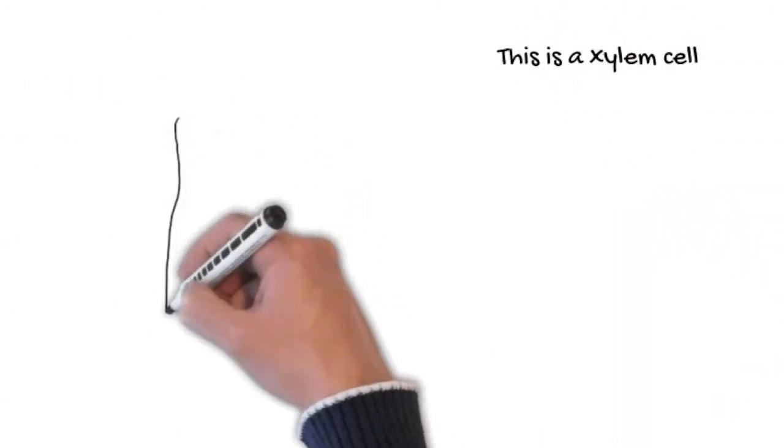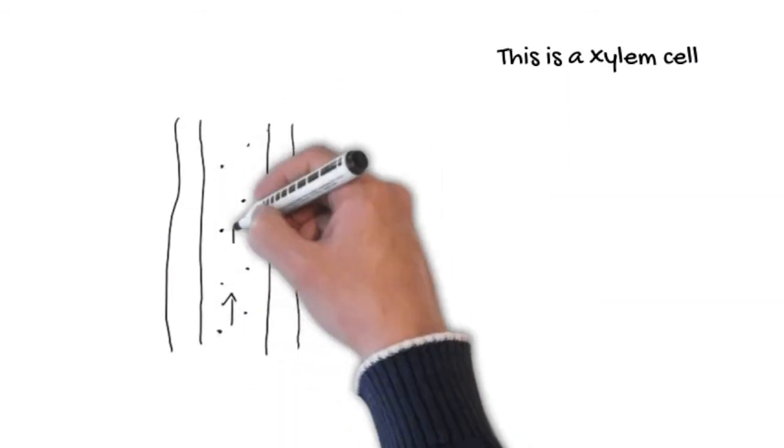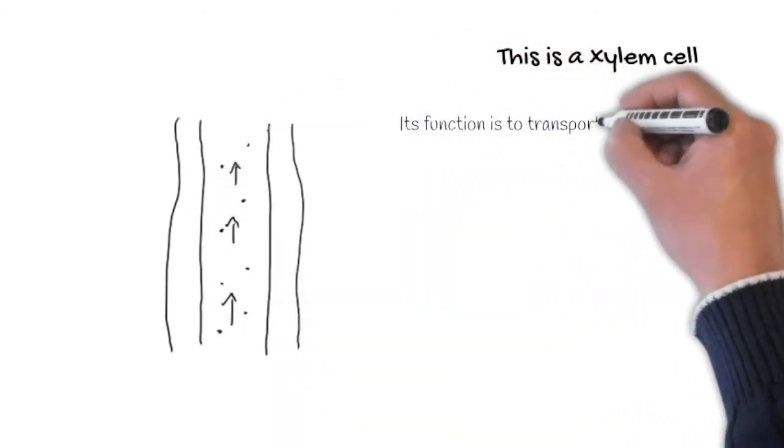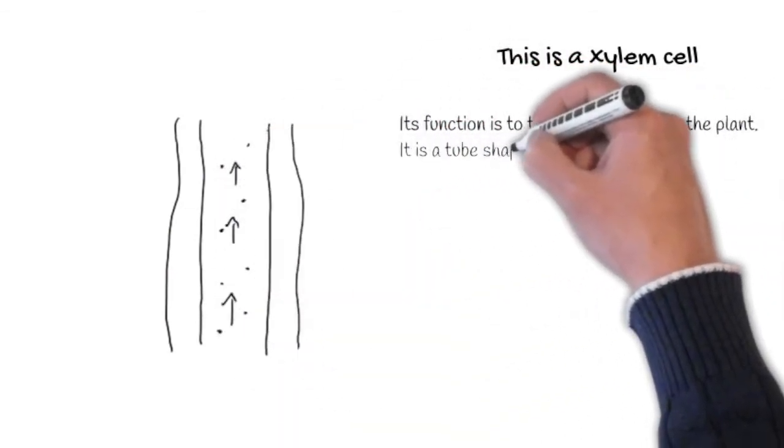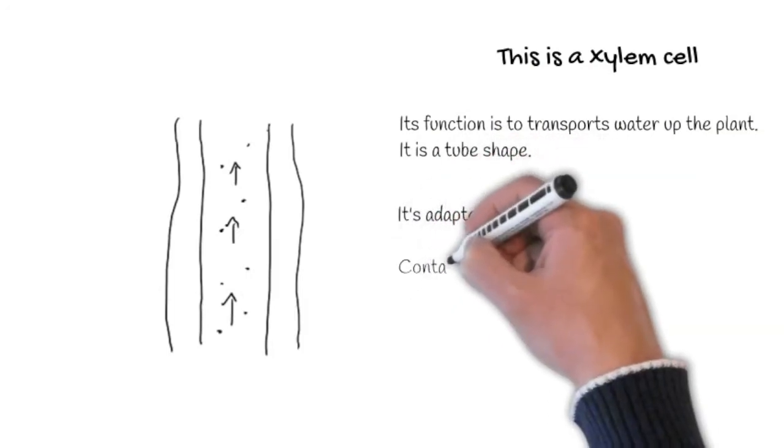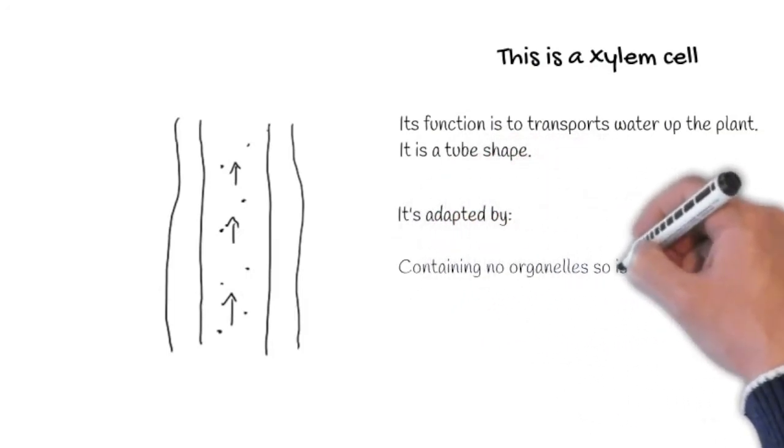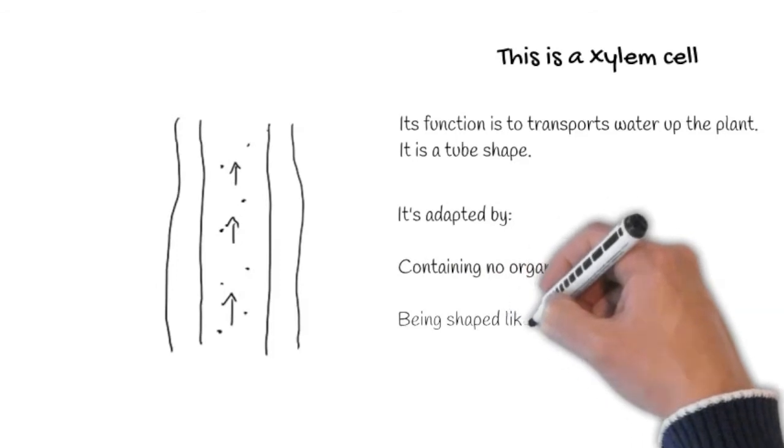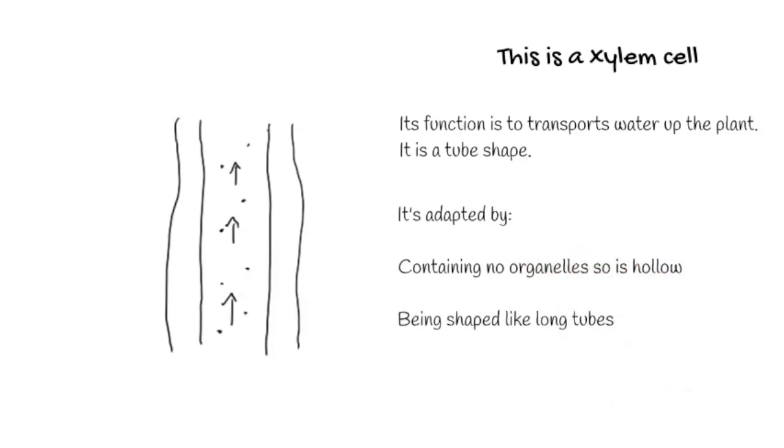This is a xylem cell. Its function is to transport water up the plant. It is adapted by containing no organelles, which makes it hollow so water can travel up and be shaped like long tubes.